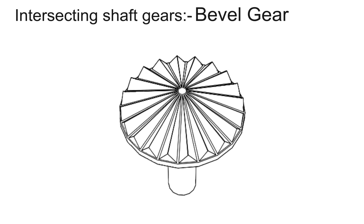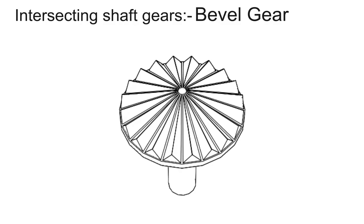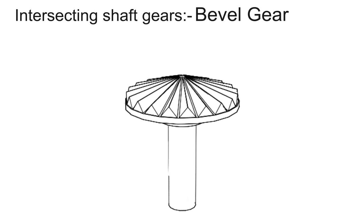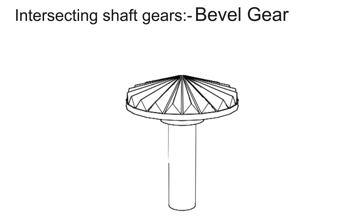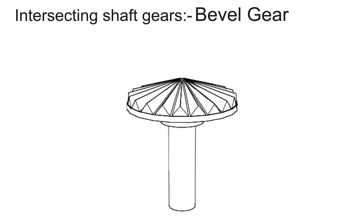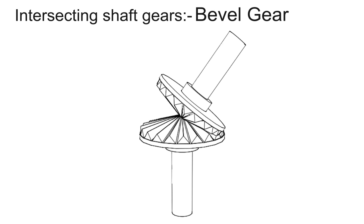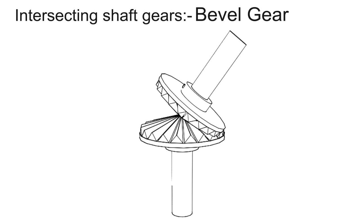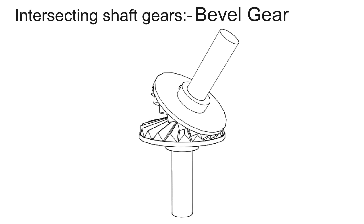Intersecting shaft gears. First one is bevel gear. Bevel gears are primarily used to transfer power between intersecting shafts. The teeth of these gears are formed on a conical surface. They become noisy above 1000 feet per minute. Straight bevel gears have straight teeth and are easily used to transfer power between intersecting shafts.